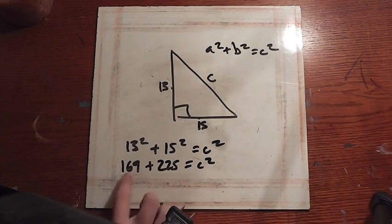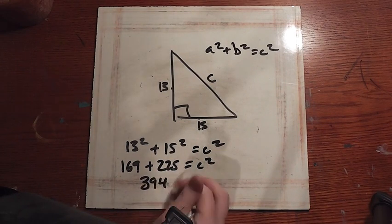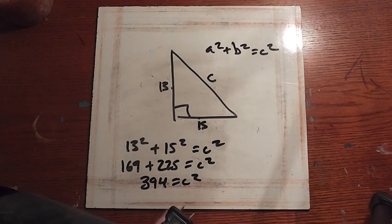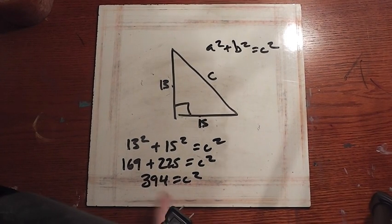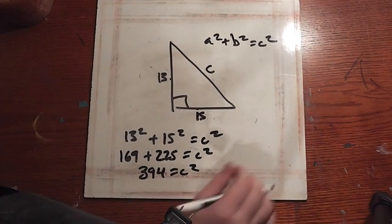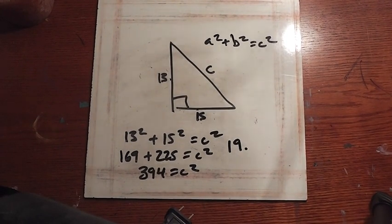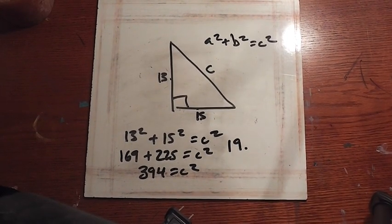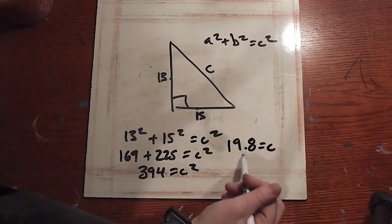Now we have to add these two together, so 225 plus 169 is 394. Now you might think you would stop there, but because C squared still has a square on it, you have to take the square root. Taking our calculators again, we're going to do the square root of 394, and you will get 19.849433324 — but just round to the tenths place and we get 19.8.